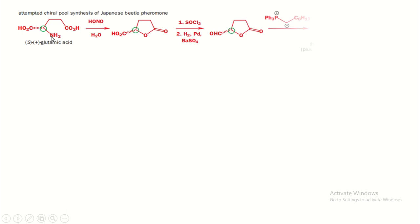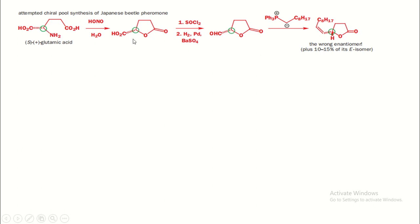In this reaction, the amino acid first reacts with NaNO₂ — a diazotization reaction takes place to form the diazonium ion (N₂⁺). Then the acid attacks the carbon as N₂ is removed to form a five-membered lactone ring. The acid reacts with SOCl₂ to give the acid chloride (COCl), which reacts with Pd/BaSO₄ in a Rosenmund reduction to form the aldehyde. This aldehyde undergoes a Wittig reaction, but the ylide is unstable, therefore giving the less stable product — a cis alkene. The product is optically active because it is obtained from the chiral pool.